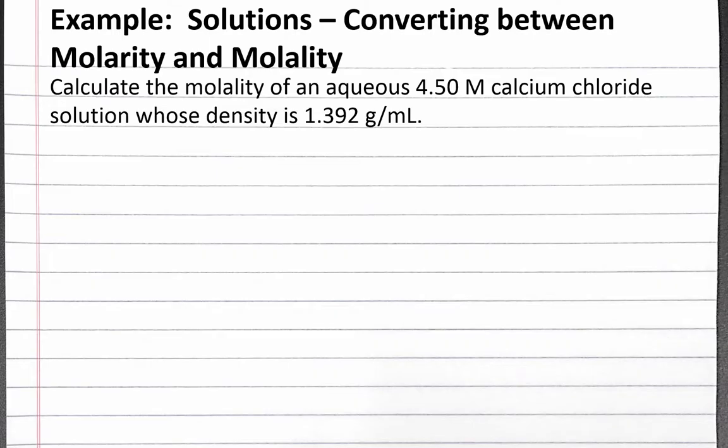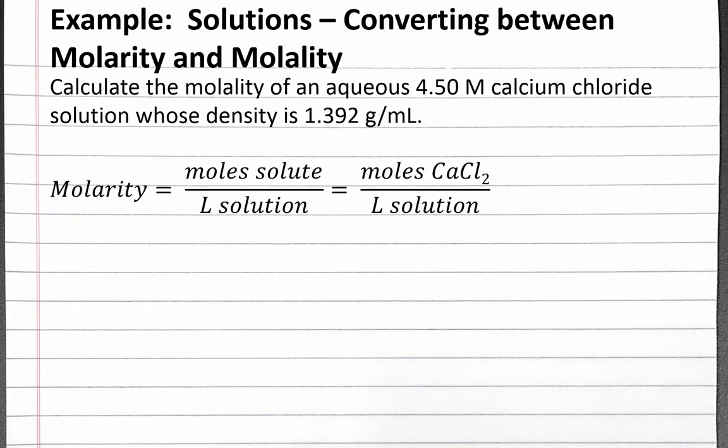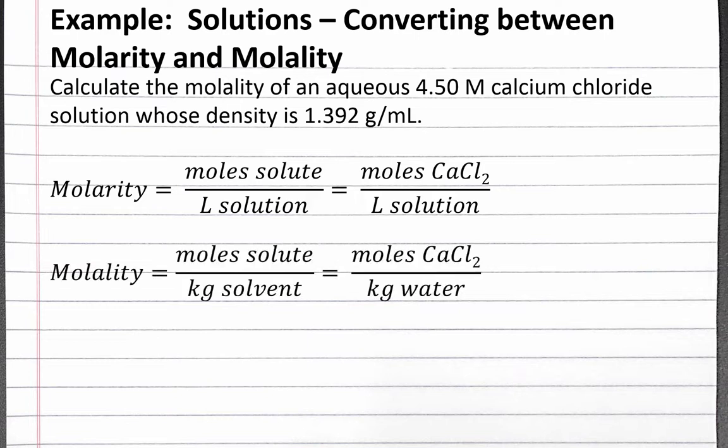Since we're converting from molarity to molality, let's start with our equations for each. Molarity is moles of solute over liters of solution. Our solute is calcium chloride. Molality is moles solute over kilogram solvent. Our solvent is water since this is an aqueous solution.